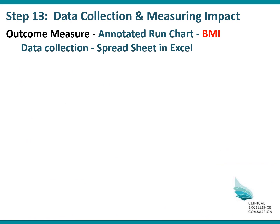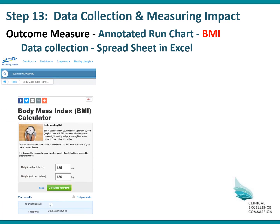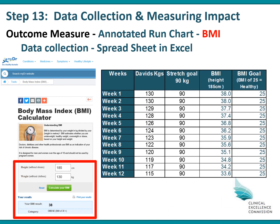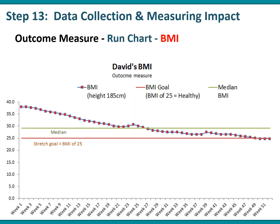Another outcome measure is David mapping his body mass index or BMI from week to week. He can calculate this using a BMI calculator from the internet and chart the information in his spreadsheet. The run chart shows his median BMI of around 29, with a stretch goal of 25, over 52 weeks of data where his BMI has reduced — indicated by a smiley face.